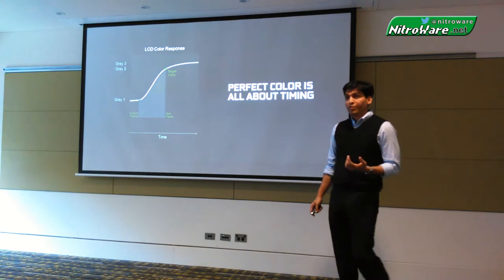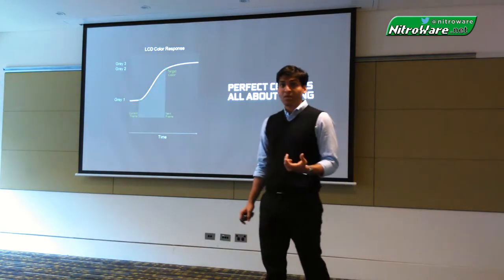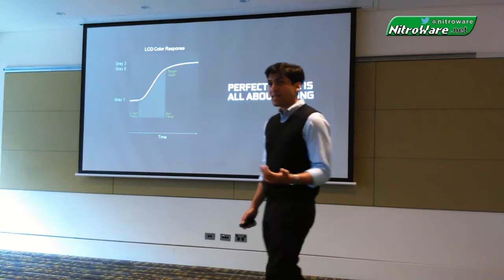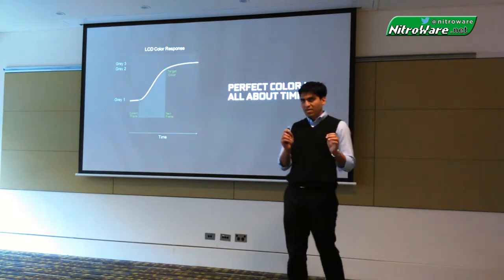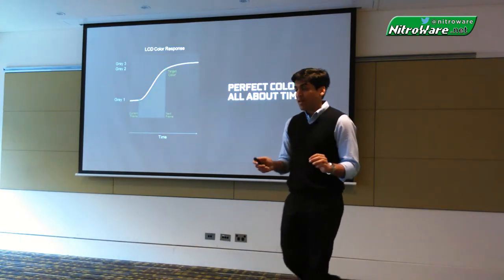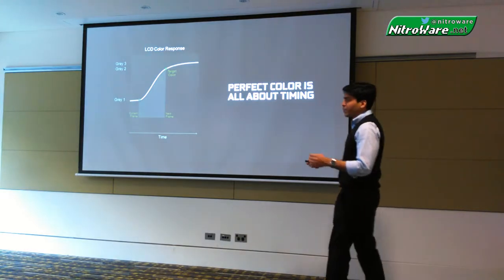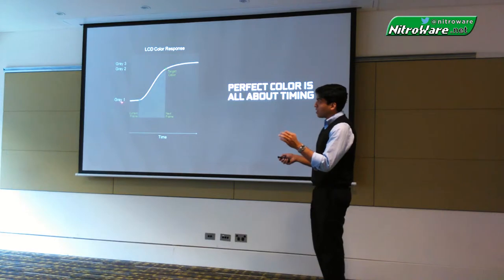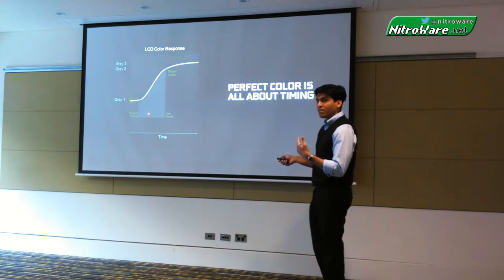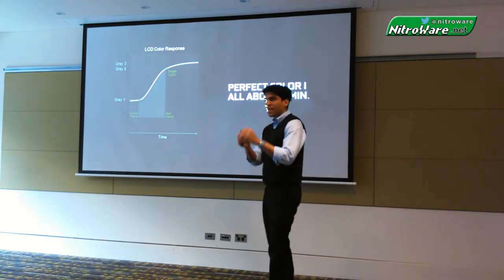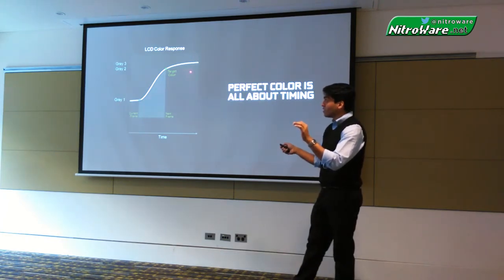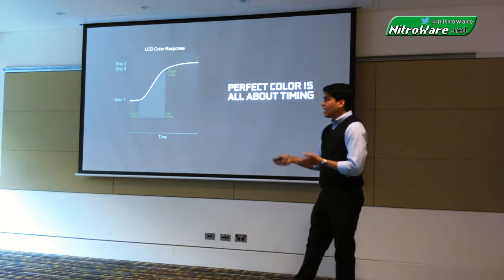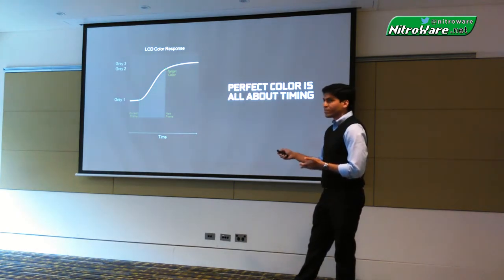That's just one example of display technology we had to innovate around for variable refresh. Another great example is overdrive. Getting the color right in the game display is actually all about timing. If a particular LCD pixel was at grey 1 and we need to move to grey 2 before the next frame began, the panel applies a voltage to that pixel such that it's actually going to move to grey 3 — and in the course of moving to grey 3, it gets to grey 2 before the next frame begins. That's how you hit your target color.